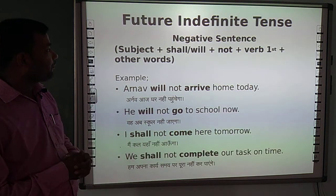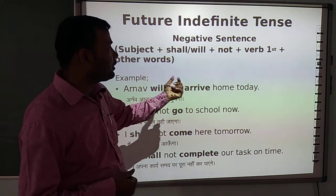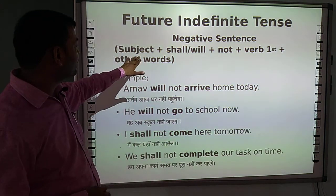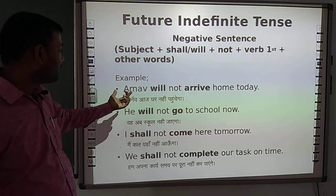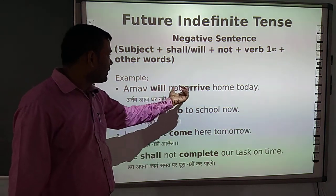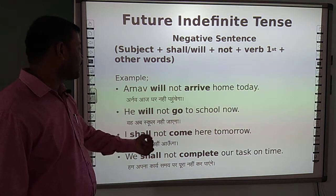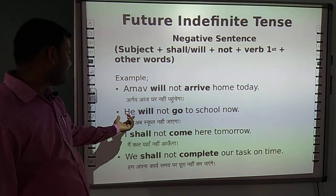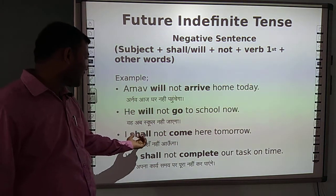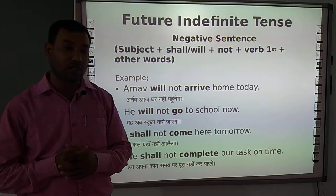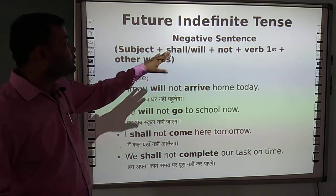For negative sentences, we place 'not' between 'shall'/'will' and the first form of the verb. The structure is: Subject + shall/will + not + verb (first form) + other words. For example: 'Arno will not arrive home today.' 'He will not go to school now.' 'I shall not come here tomorrow.' 'We shall not complete our task on time.' In each case, 'not' is placed between the helping verb and the main verb.